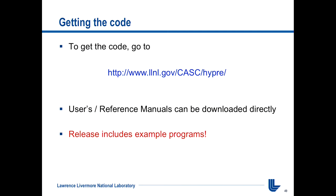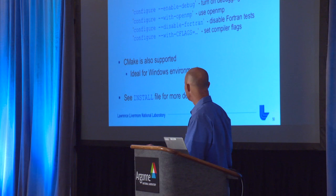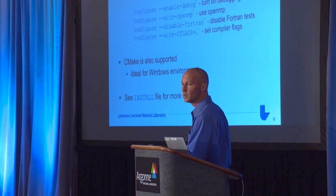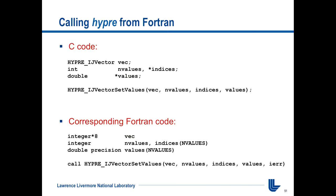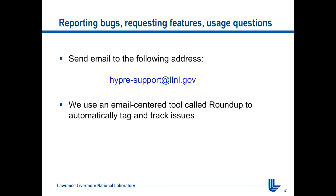Getting the code is easy — just go to the download site; you can Google it and find things quickly. We have example programs included. Building the library is straightforward: just type configure followed by make. If it doesn't work, there are configure parameters to help. There's also a CMake build path, which is ideal in a Windows environment. The install file that comes with the distribution has more information. We also support Fortran with a one-to-one mapping between the C and Fortran interfaces. For questions, comments, or bug reports, the HYPRE support email is the best way to contact us.